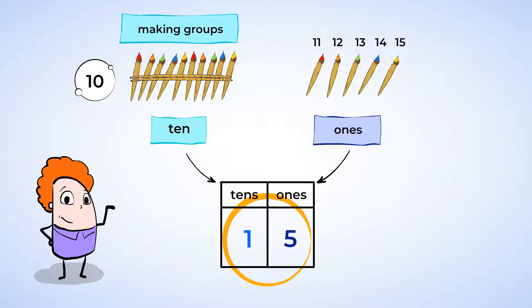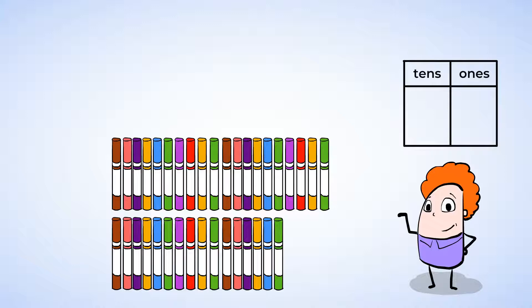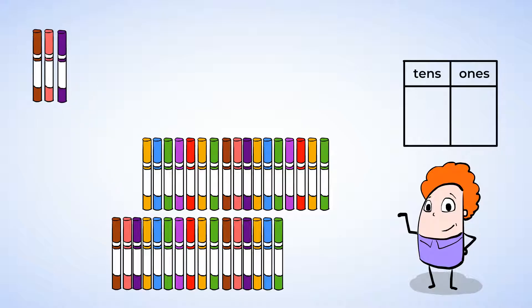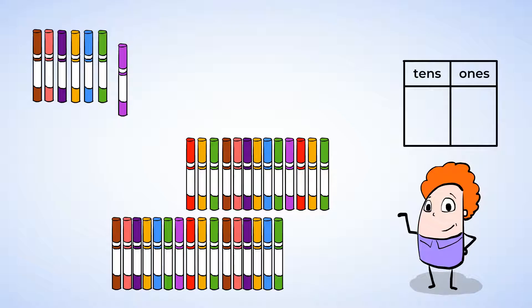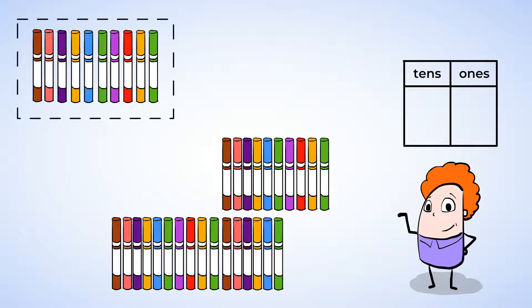Now it's time to move on to the markers. Just like before, we're going to make groups of 10 to help us count quicker. Let's start by counting 1 group of 10. 1, 2, 3, 4, 5, 6, 7, 8, 9, 10. That's one group of 10.